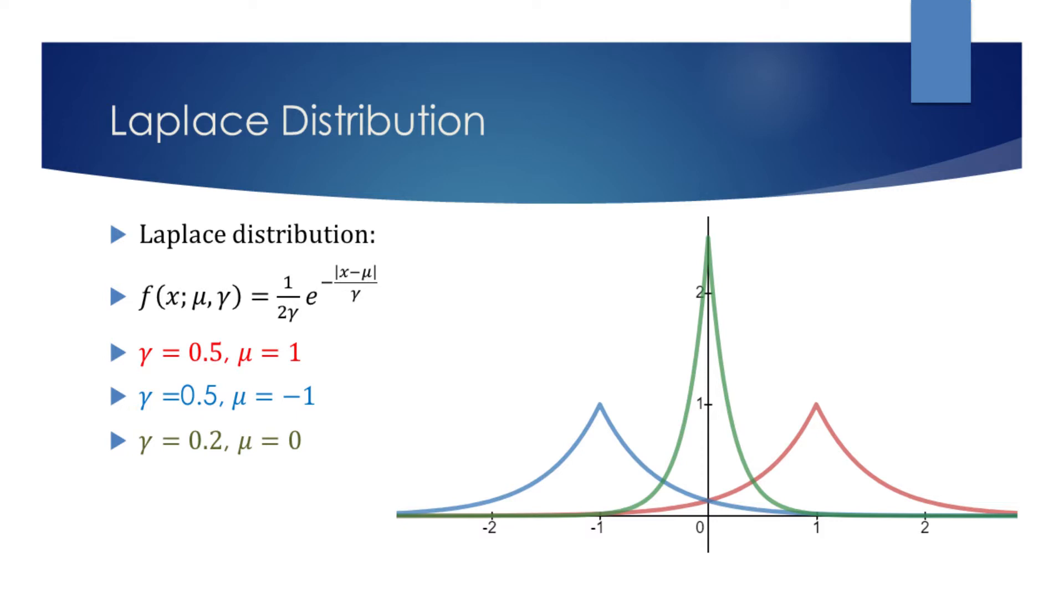For example, mu of the red graph equals 1, and we see that its peak is at x equals 1. Similarly, the peak of the blue graph is at x equals minus 1, because mu is also minus 1.